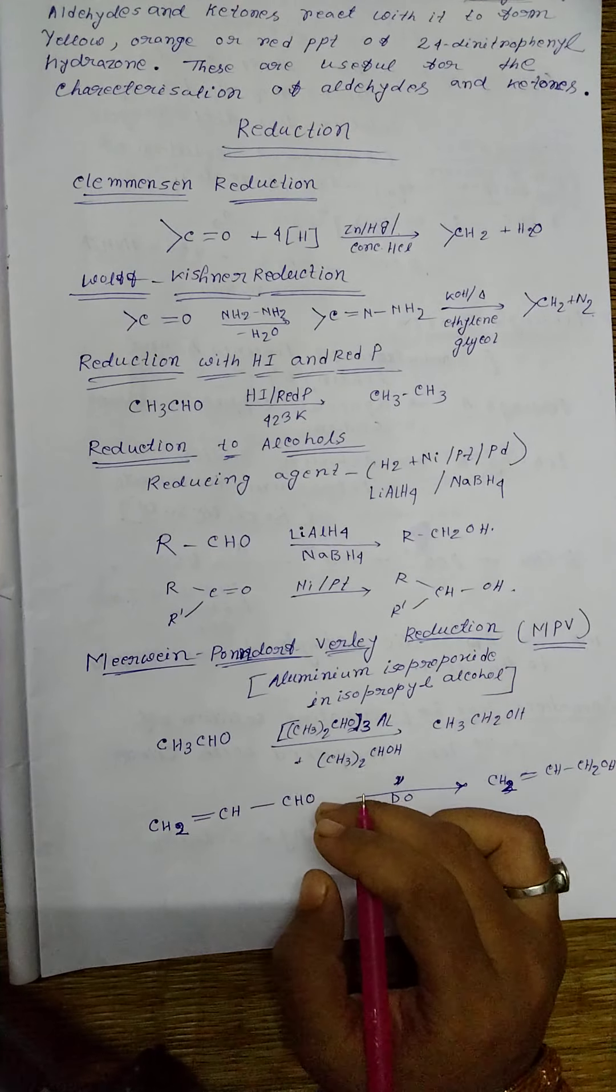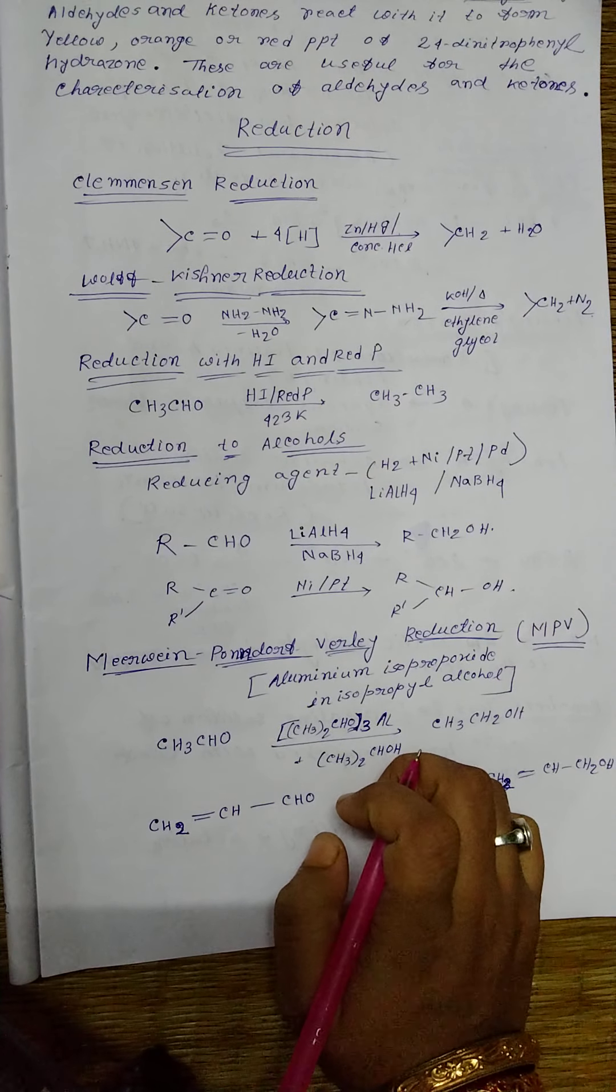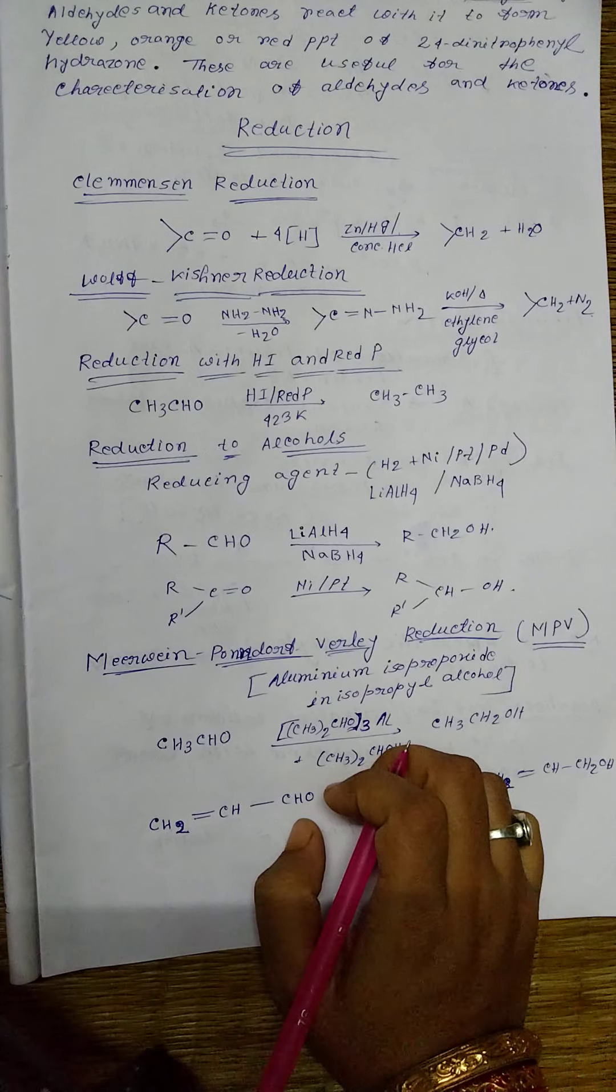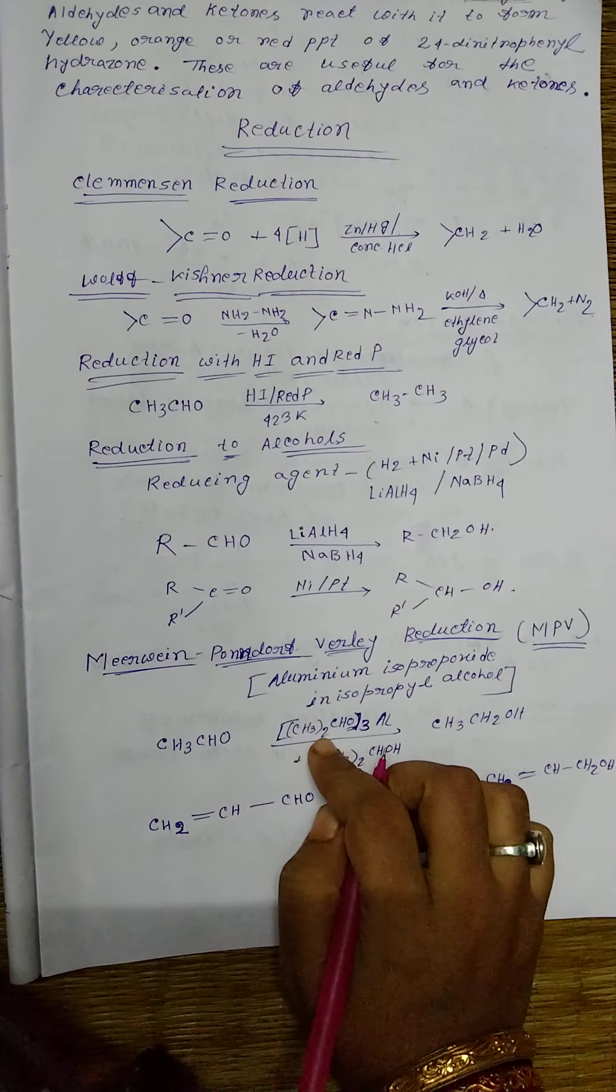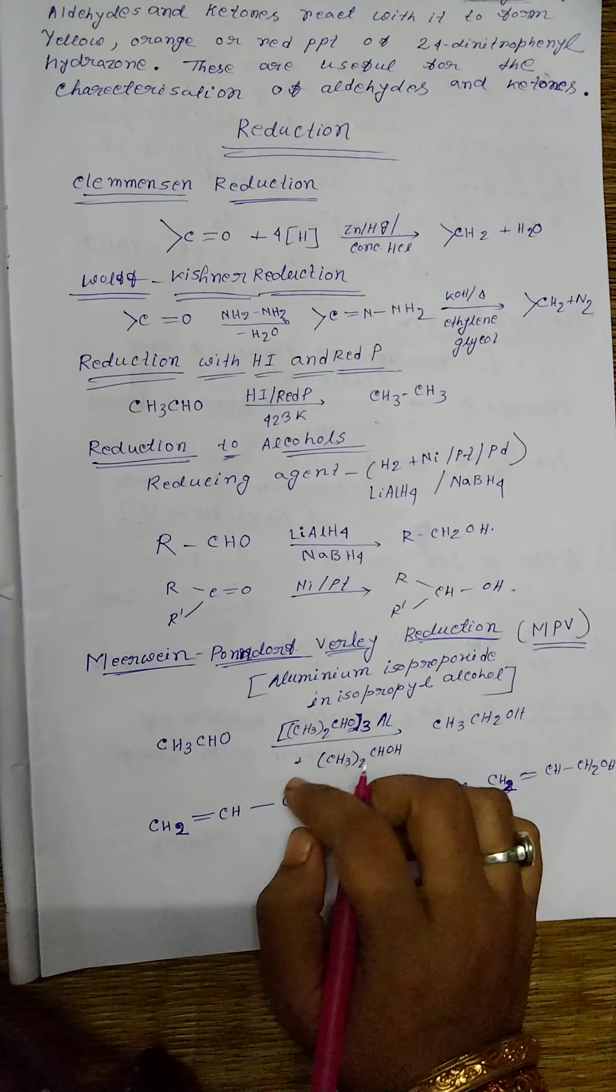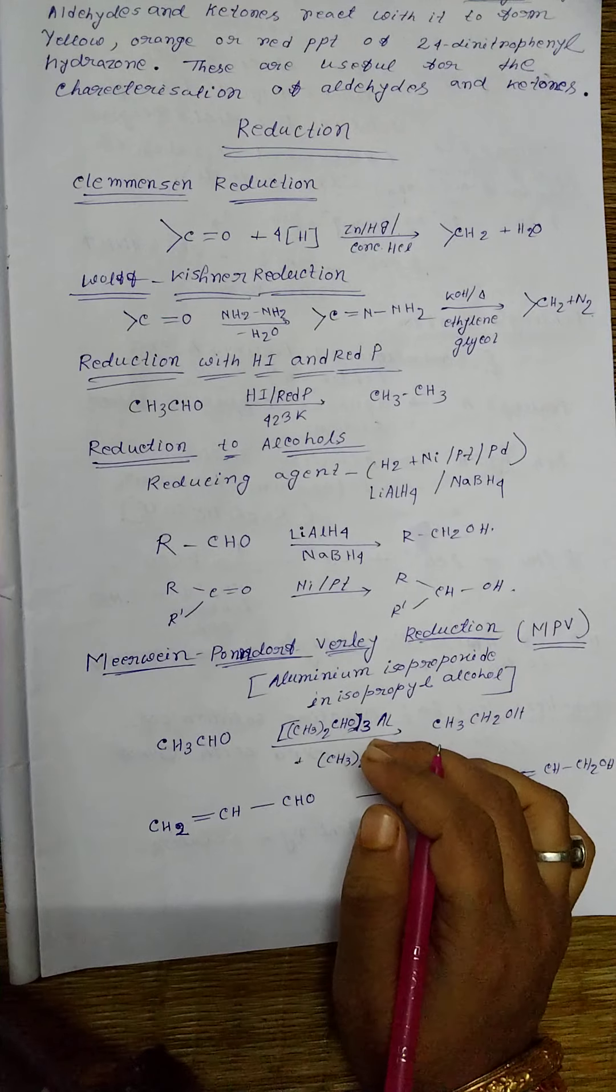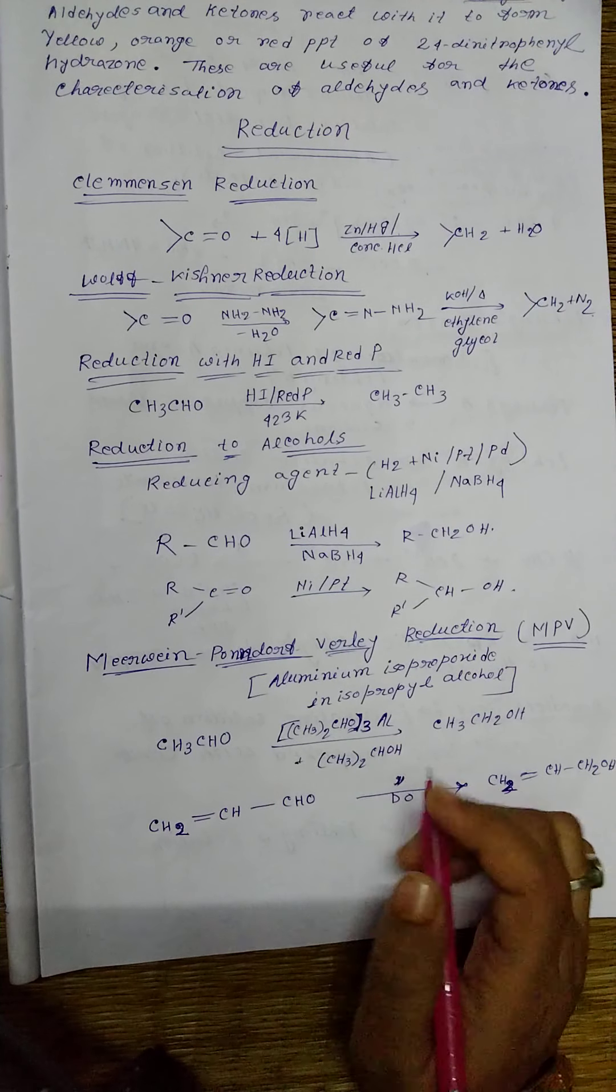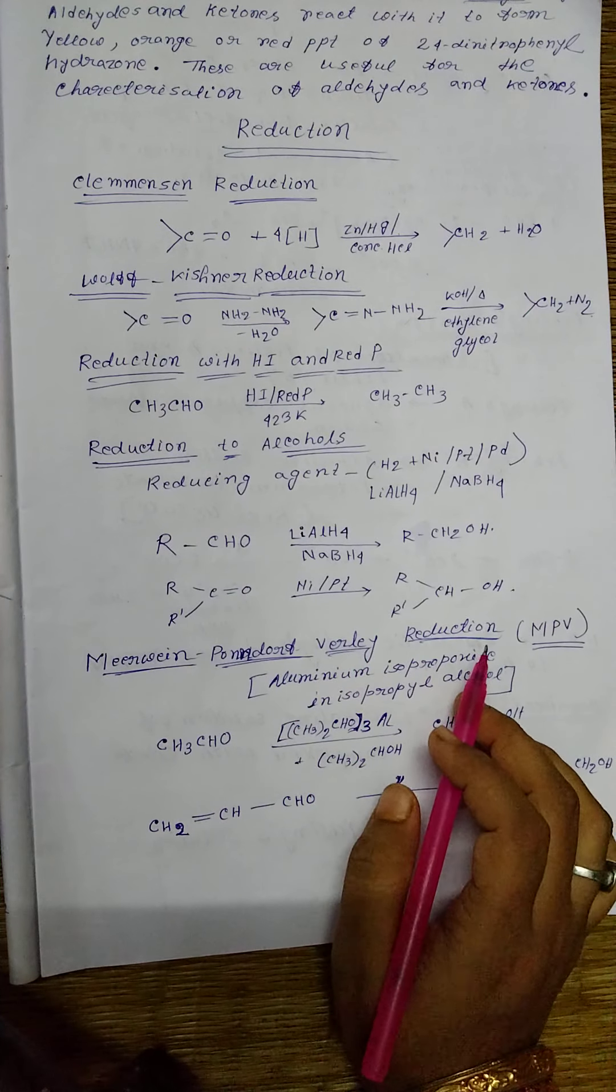What is the importance of this reduction reaction? If unsaturation is present in the compound, that is a double bond is also present in the compound, this double bond is not affected by this process. Only the carbonyl group is reduced to alcoholic group. So this is Meerwein-Ponndorf-Verley reduction reaction.